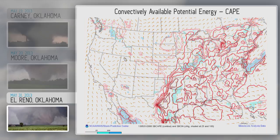Here's the third one, west of Oklahoma City in Canadian County. The CAPE map looks just like the others — 5,000 joules per kilogram of energy in central Oklahoma. They all kind of look alike.